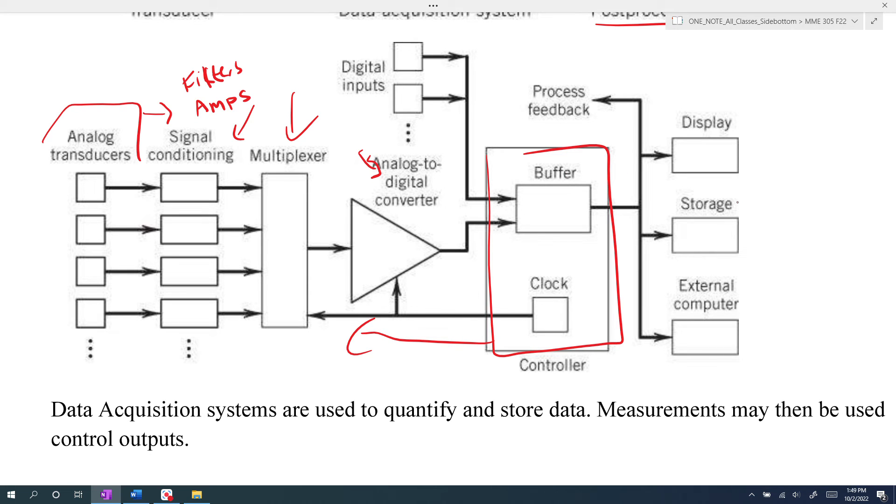Typically that also communicates with your computer, so your computer typically has a display, stores the data somewhere, and then sometimes the computer or the code that you're running can then also change the process or the feedback.